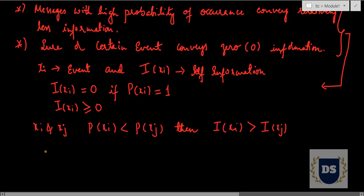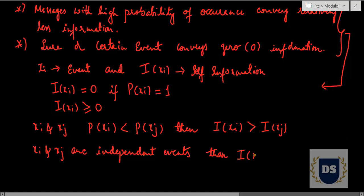Finally, if x_i and x_j are independent events, then i(x_i, x_j) equals i(x_i) plus i(x_j). So we have made four observations and rewritten them mathematically. Observation one states that self-information equals 0 for a certain event, and certain events are always associated with probability equal to 1.